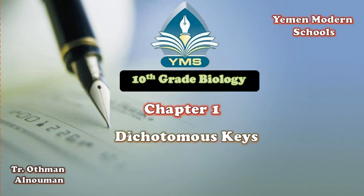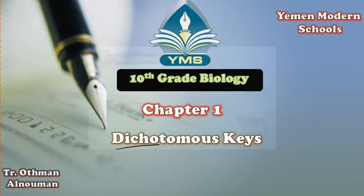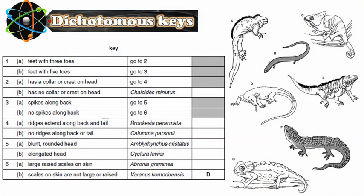In this video we're going to look at a dichotomous key and how to use it to identify organisms. 'Di' means two, so it is a key which has two branches. This key is used to identify things by asking yes/no questions. For example: does it have feet? Yes, go to three. No, go to five.